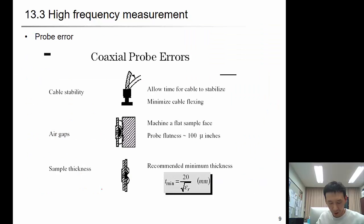Coaxial cable is very sensitive. The cable should stay sturdily. Air gap, if there's an air gap, can create capacitance effect. So you have to machine the flat sample surface. The sample thickness should be bigger than the skin depth. And this is the limitation.